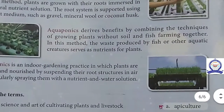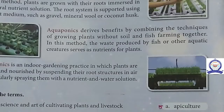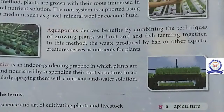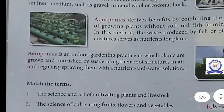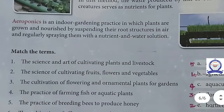Aquaponics provides benefits by combining the techniques of growing plants without soil and fish farming together. In this method, the waste produced by fish or other aquatic creatures serves as nutrients for plants.